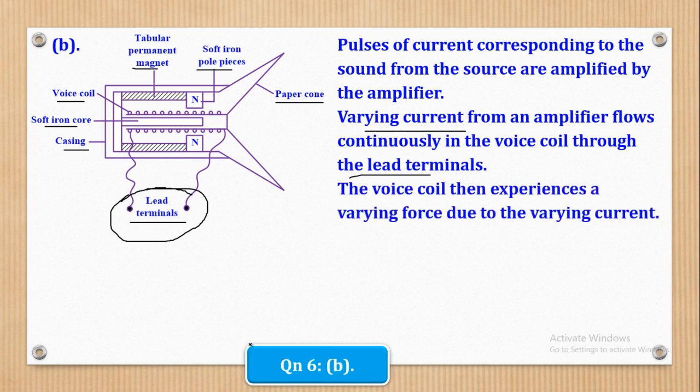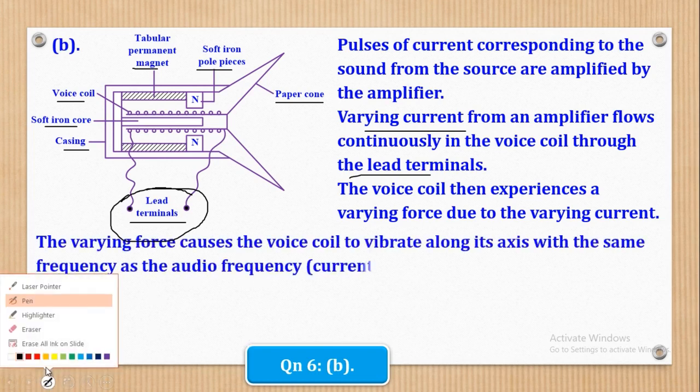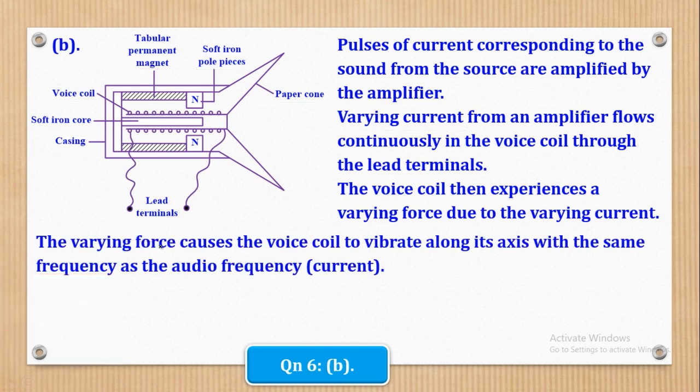So here the pulses, these pulses of current corresponding to the sound which have been amplified, are connected to this. So the amplifier is connected to this lead terminal so that this varying current flows. Next we shall say that the voice coil then experiences a varying force due to the varying current. So when current varies, that means that the force also varies.